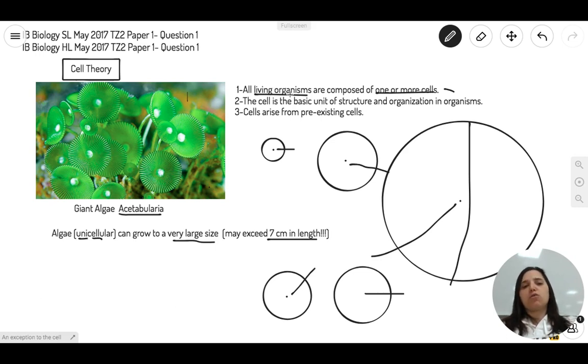Now, so acetabularia can just go back here and say, sorry, but I can work with one huge cell and be perfectly fine. And for that reason, it is one of the exceptions to the cell theory. Not all living organisms, especially when they get bigger, need to be more cells. Acetabularia can be 7 centimeters and still live lively with no issues whatsoever.